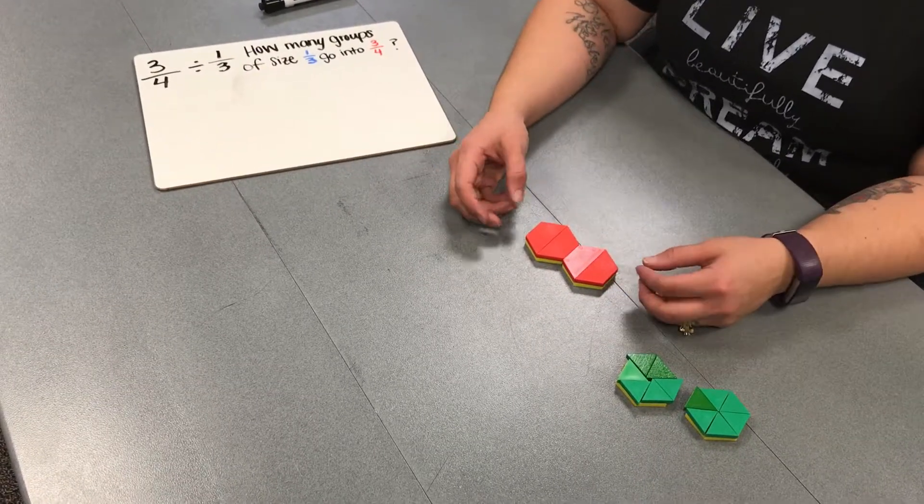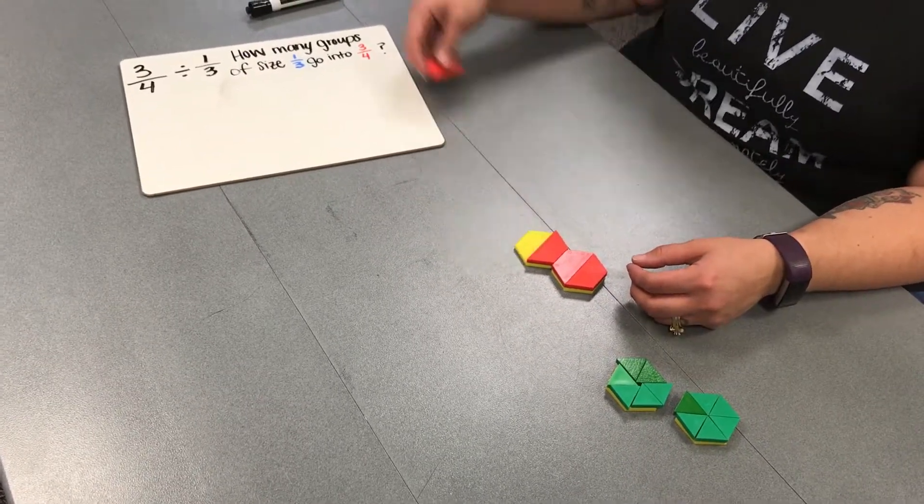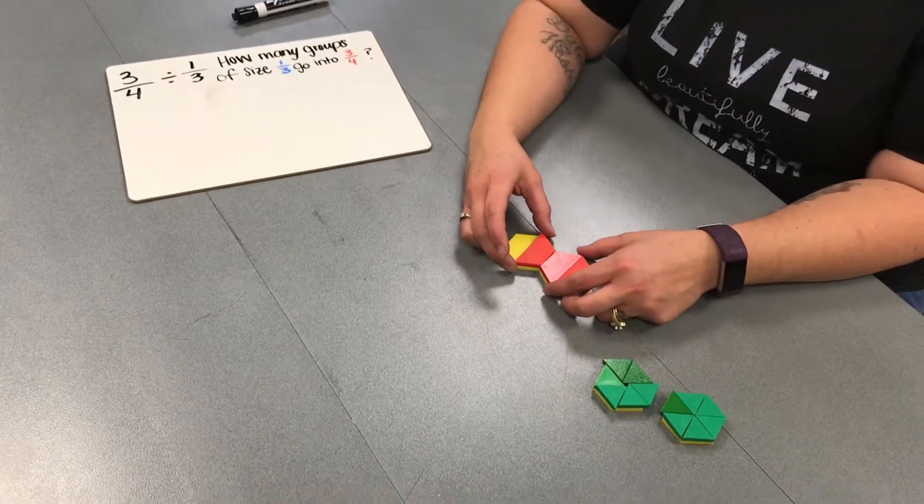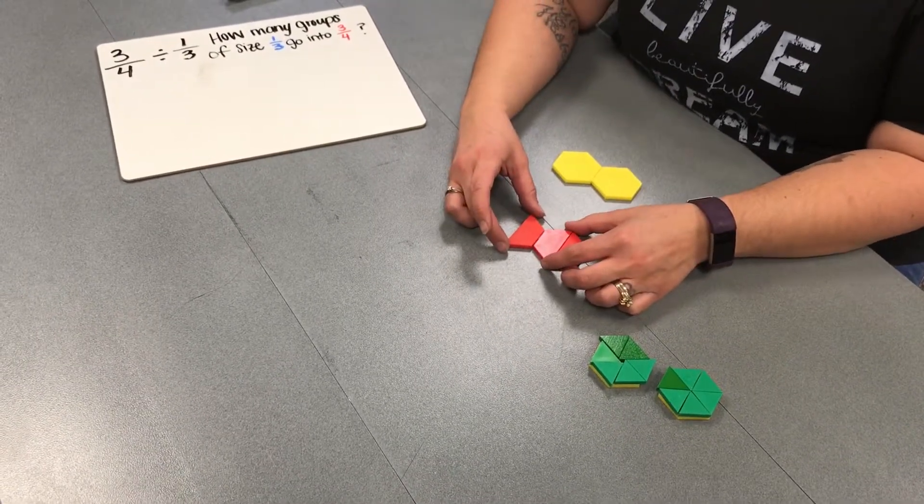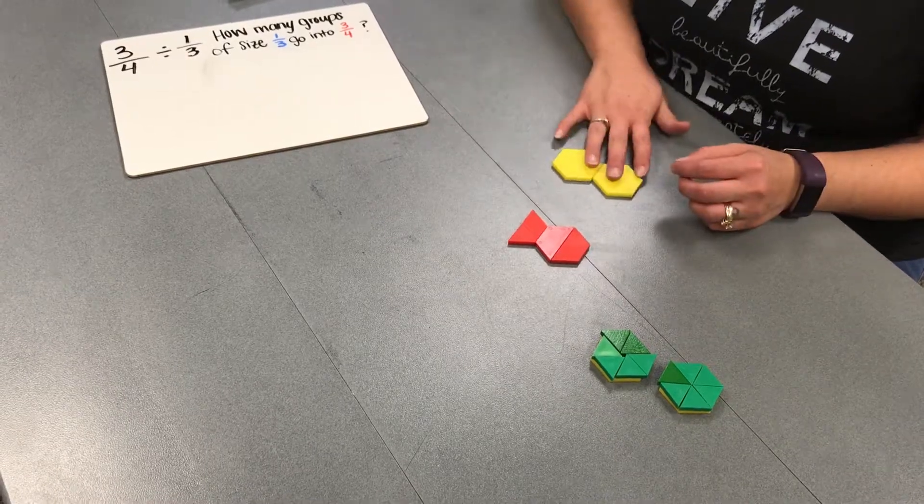So we need to find 3 fourths. So we can just take one of these trapezoids away, and we have our 3 fourths. So this right here represents 3 fourths of our whole.